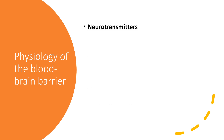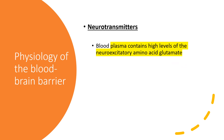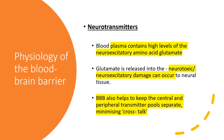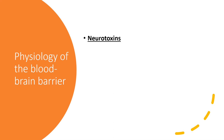The blood-brain barrier protects neurons from neurotransmitters circulating in blood plasma. Blood plasma contains very high levels of neuro-excitatory amino acids like glutamate, which if released inside the brain can cause neurotoxicity and excitatory damage. The blood-brain barrier keeps the central and peripheral transmitter pools separate, minimizing crosstalk between the two sets of neurotransmitters.